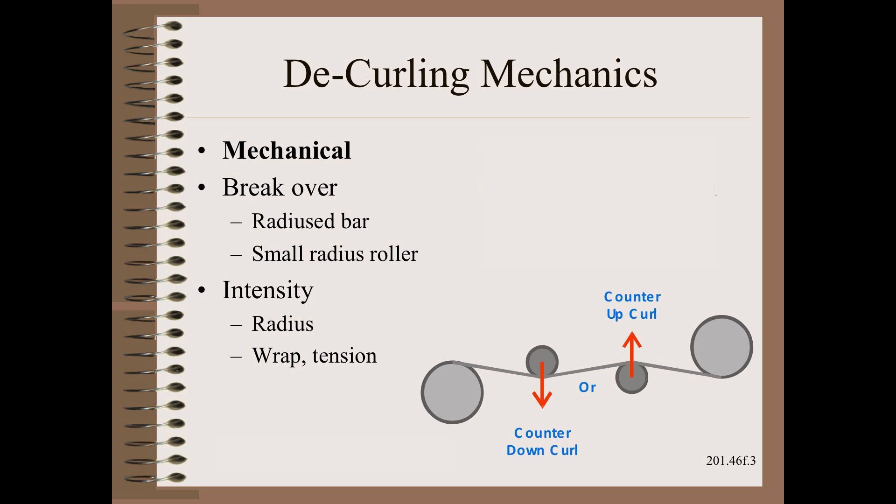Also from mechanics, and just like we saw in roll set curl, the problem is affected by tension and time. Time here is wrap angle and web speed. Just as we saw in roll set curl, however, these factors are weak.